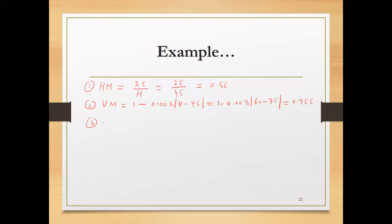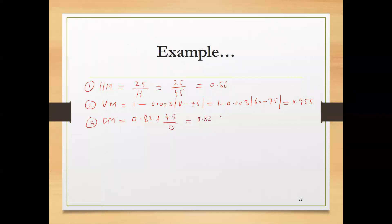The third multiplier is DM, the distance multiplier. That is equal to 0.82 plus 4.5 over D. With D equal to 70, that gives 0.82 plus 4.5 over 70, which equals 0.88.